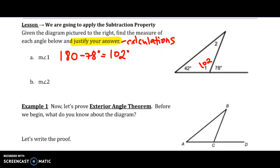For the measure of angle 2, I have two options here. I can either use the Exterior Angle Theorem, which we're going to be proving in the first example, to apply the subtraction property, or I can add the angles in the triangle and subtract from 180 to get angle 2. I'll give you both of them. So 102 plus 42 is 144, and 180 minus 144 equals 36.